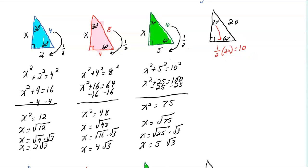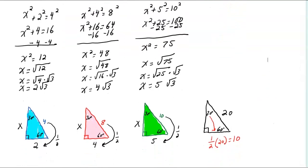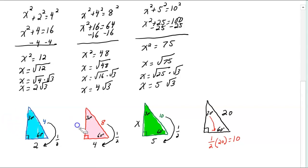In solving for x, you can see all the work. Let's add that to our diagram. In the blue triangle, x is 2√3. In the red triangle, x is 4√3. In the green triangle, x is 5√3.